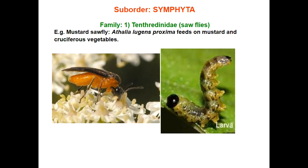Sawfly larvae have one pair of ocelli, three pairs of thoracic legs, and six to eight pairs of abdominal legs. Normally, lepidopteran caterpillars have a maximum of five pairs of prolegs in the abdomen, but sawfly caterpillars have six to eight pairs of abdominal pseudo-legs or prolegs. Prolegs lack crochet hooks, which are highly developed in lepidopteran caterpillars. They are external feeders on foliage.